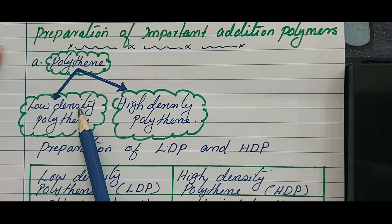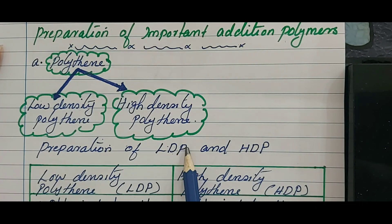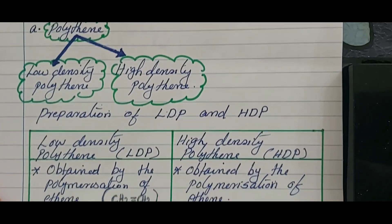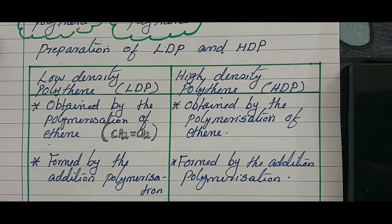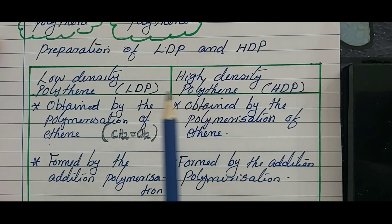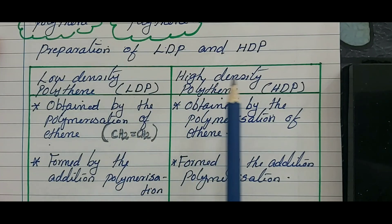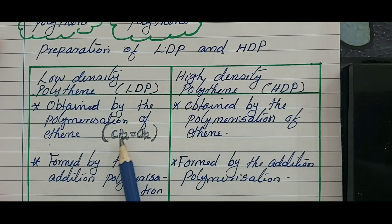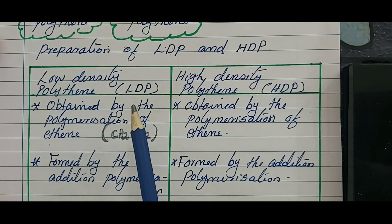The short form of low density polythene is LDP and high density polythene is HDP. I have written both in a tabular form so it will be easy for you to remember. Both LDP as well as HDP are formed by polymerization of ethene — that means ethene is CH₂=CH₂ — the monomer of both high density and low density polythene is ethene only.